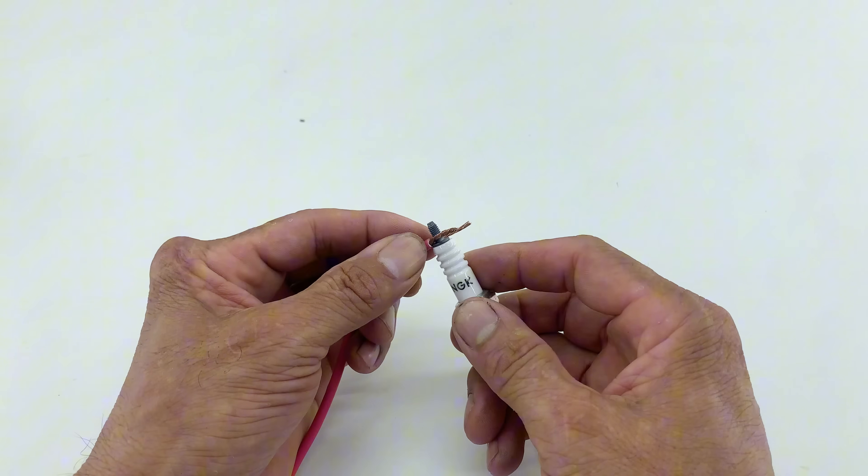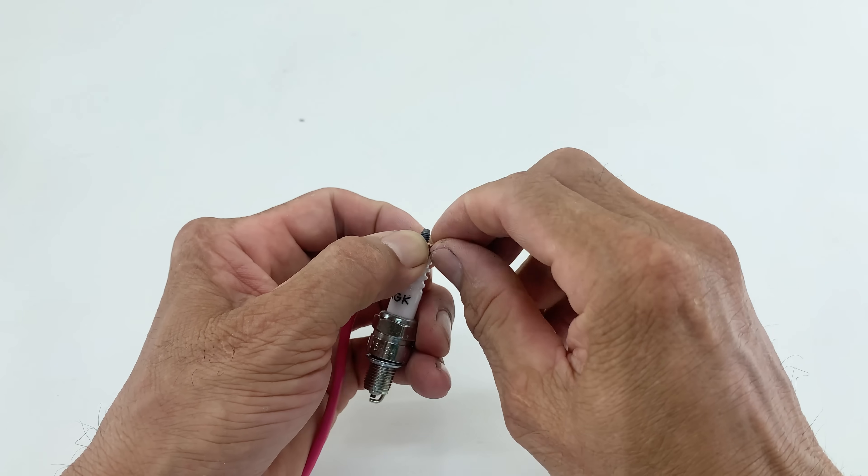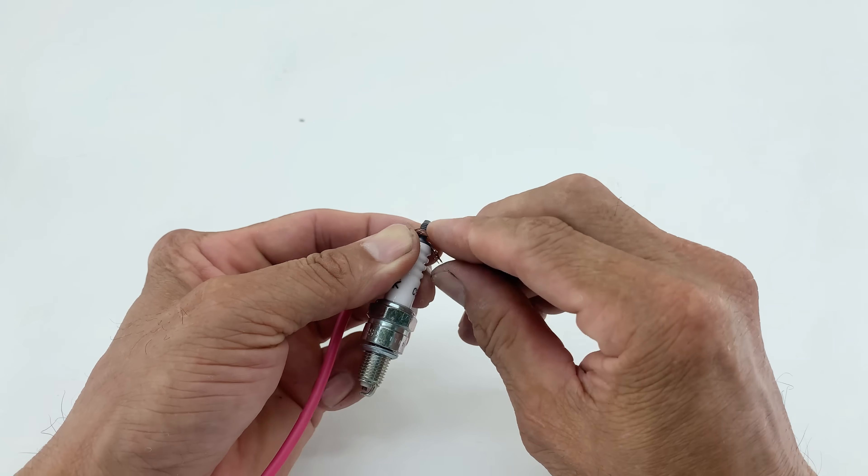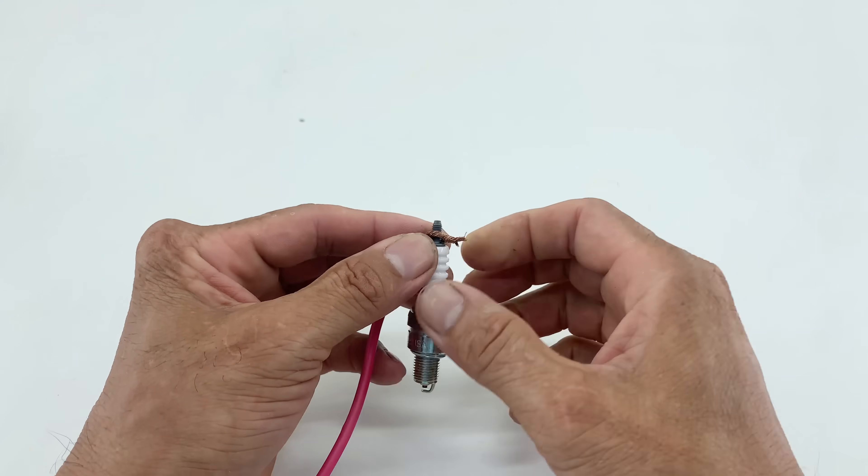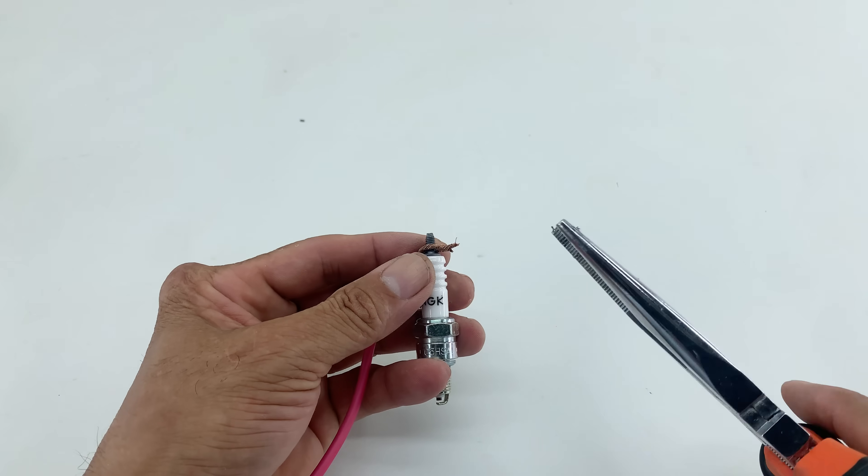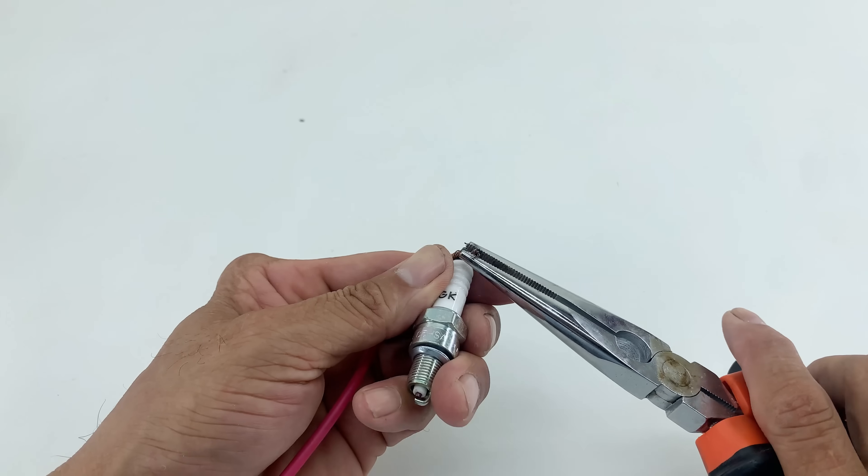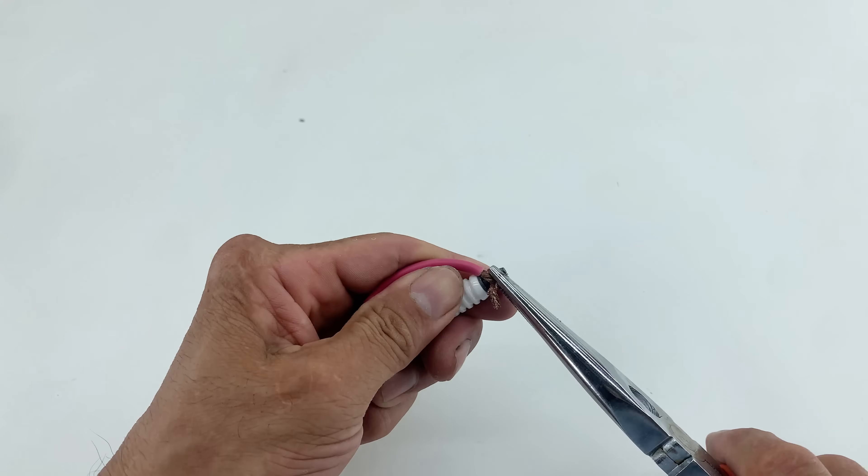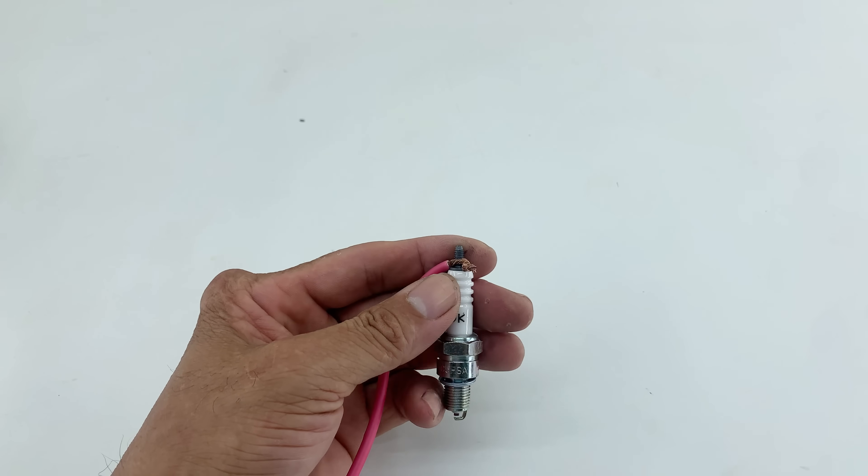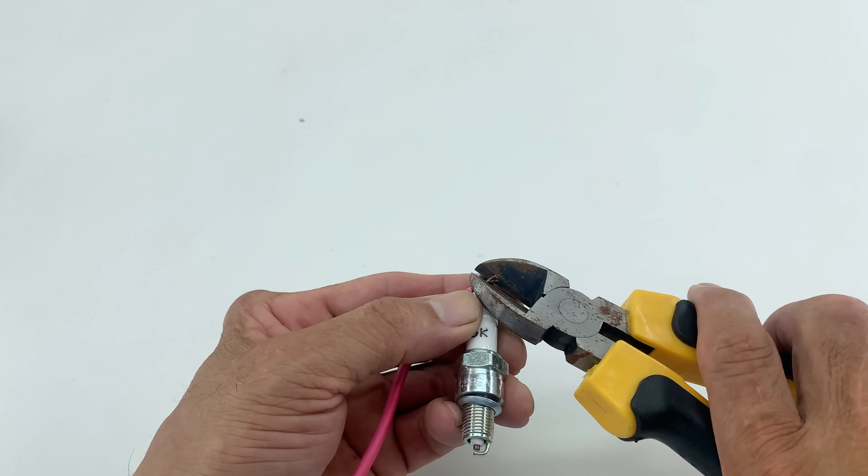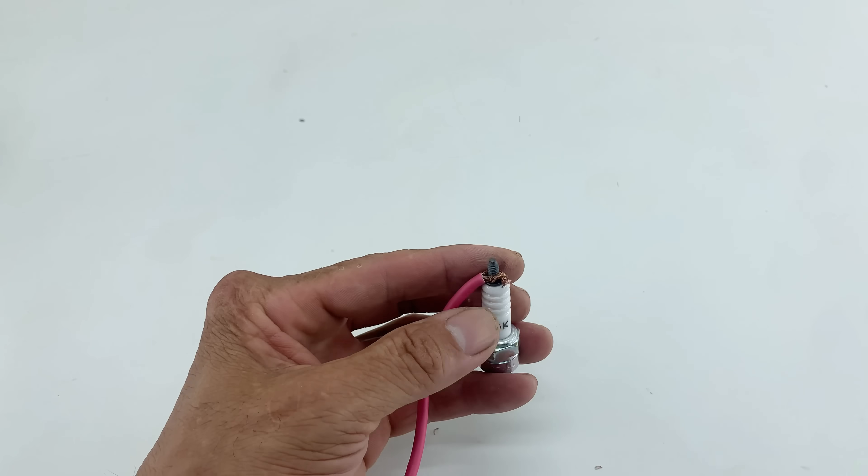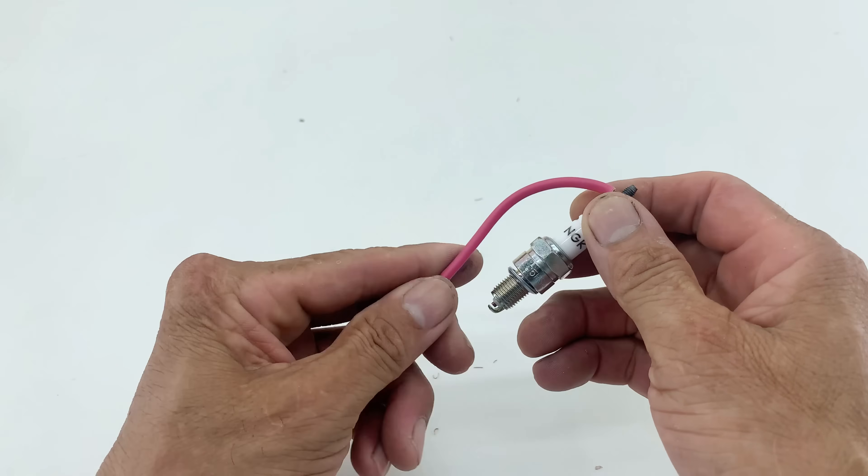I twist one stripped end around the very top of the spark plug, making sure it's tight. A secure connection is paramount for efficient electrical conductivity and tool stability. I use needle-nose pliers to firmly crimp the wire around the terminal, enhancing both mechanical and electrical integrity. Finally, I trim any superfluous wire material to streamline the assembly.